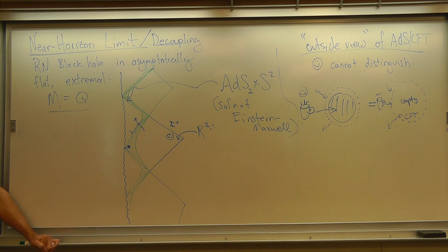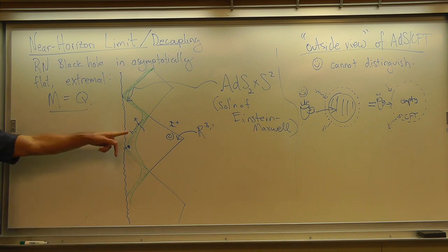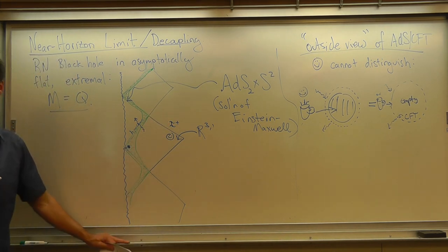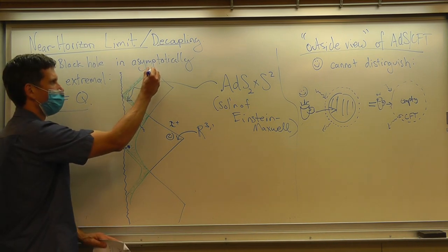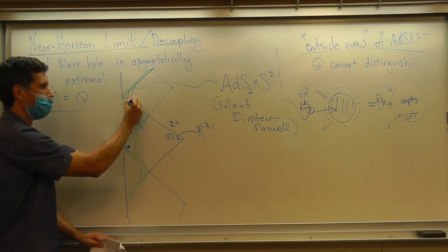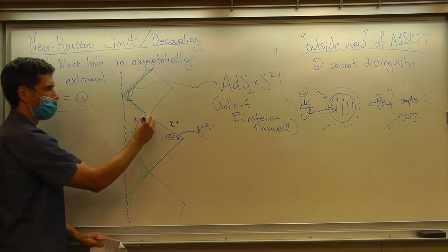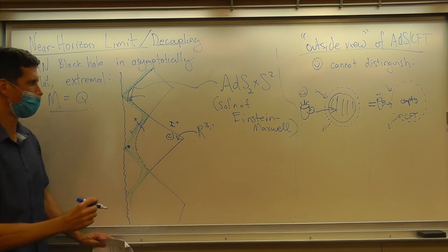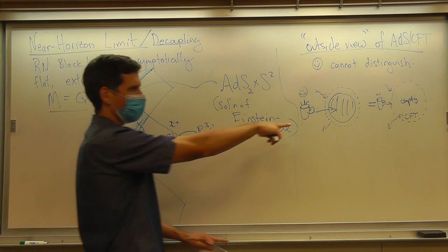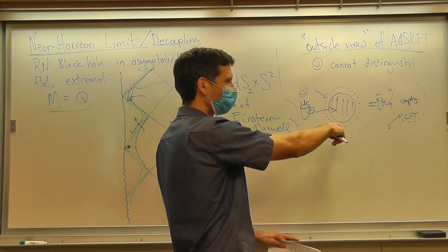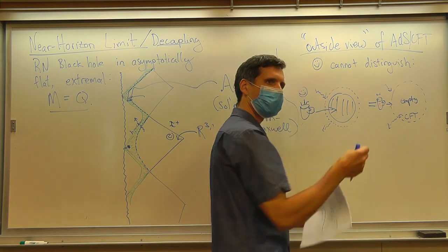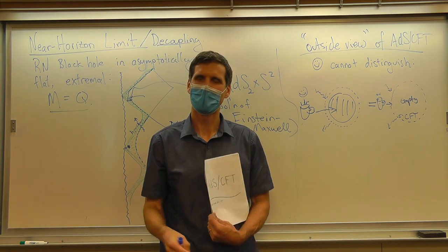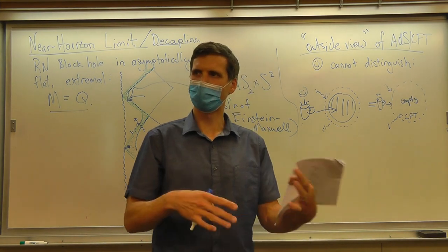The CFT lives at the boundary of ADS, which on the Penrose diagram is the outer part of the green strip. The dashed line — the imaginary cutoff separating the near-region from the far region — is the ADS boundary. That's where we glue things together.